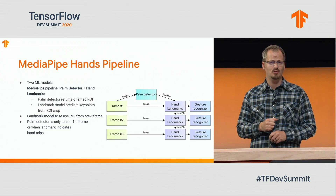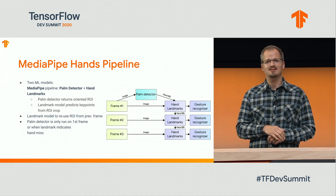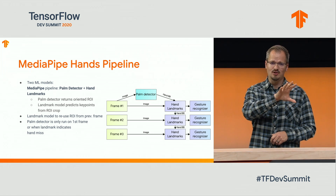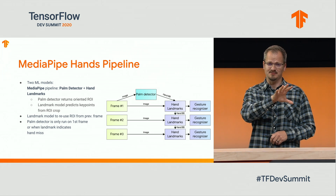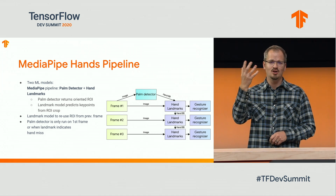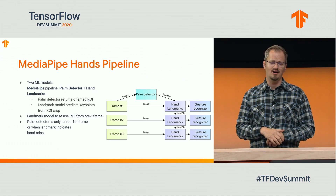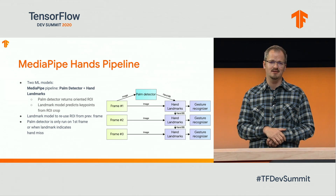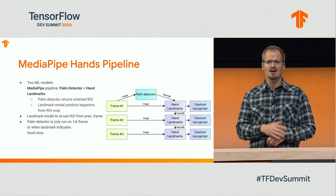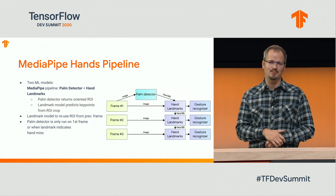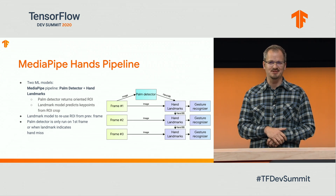Let's look at how this works. Again, we built this as a MediaPipe pipeline, consisting of a detector locating where palms or hands are. We then crop that region and run a landmark model that computes the skeleton of a hand. As before, we don't have to run the detector on every frame — only really on the first one, or if our landmark model indicates a tracking miss.